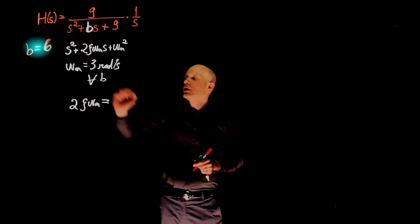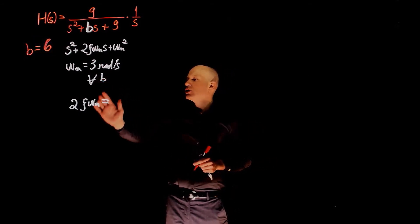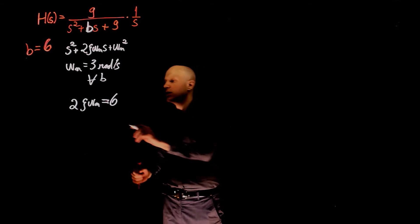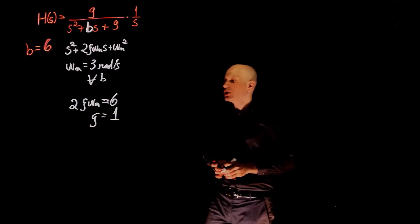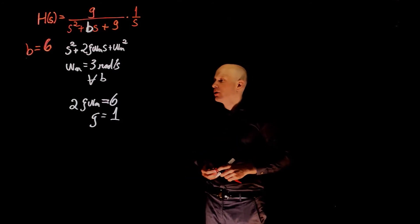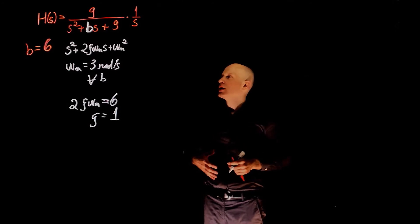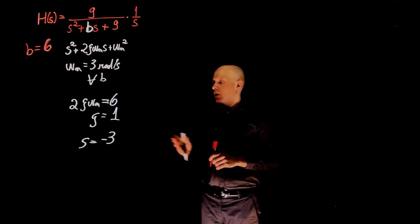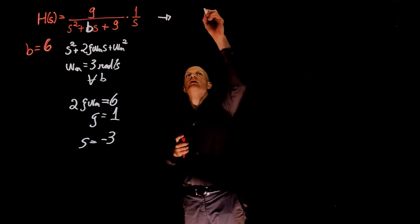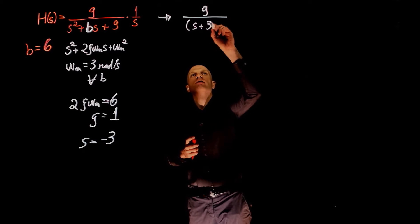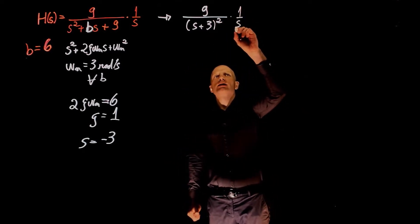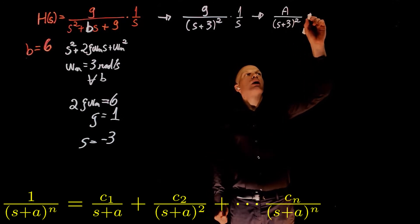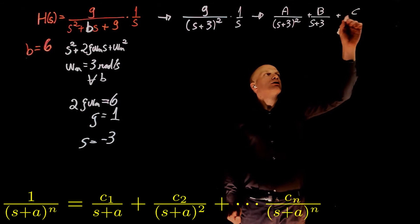Let's repeat this exercise for b equals to 6. The natural frequency doesn't change, but now 2 zeta omega n equals to 6. With omega n equal to 3, the damping ratio zeta equals 1. A damping ratio of 1 characterizes a critically damped system. For a critically damped system, the poles are real but equal — in this case, both poles are negative 3. We can rewrite the expression as 9 over (s plus 3) squared times 1 over s, and expand it in partial fractions as a over (s plus 3) squared plus b over (s plus 3) plus c over s.